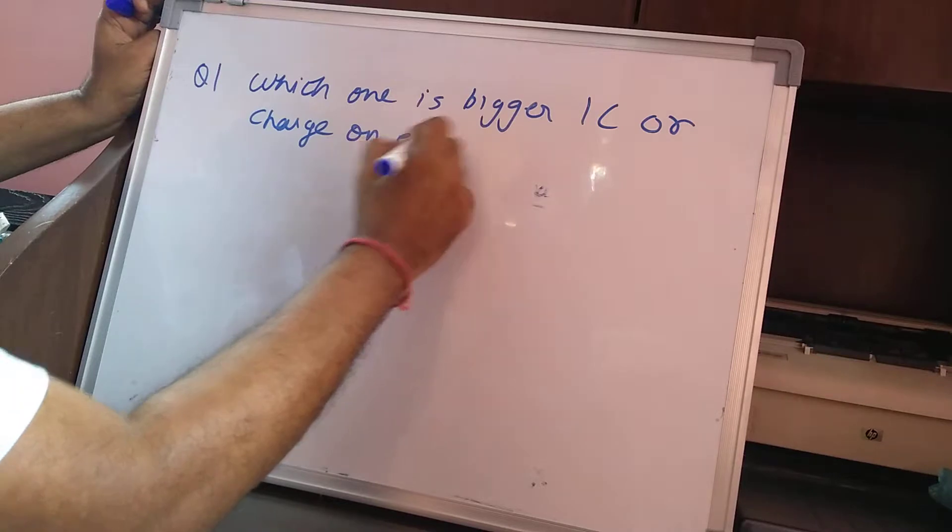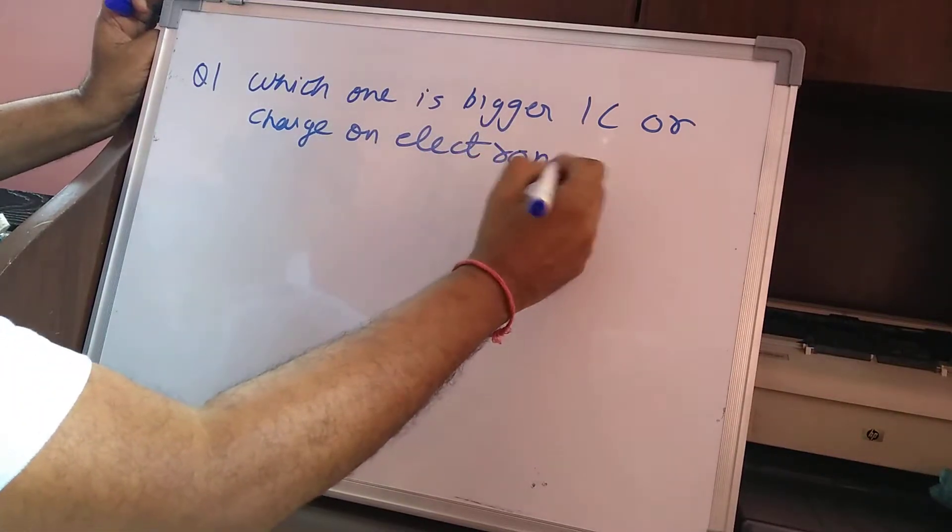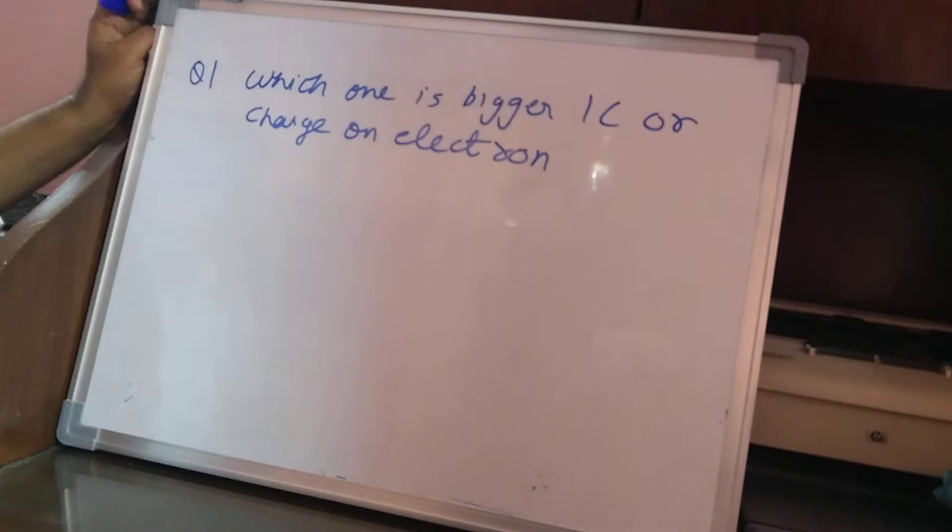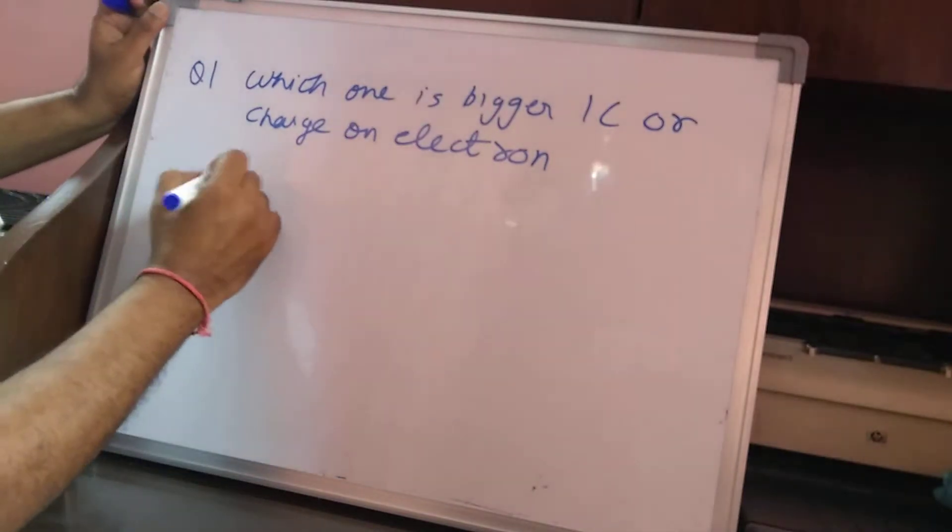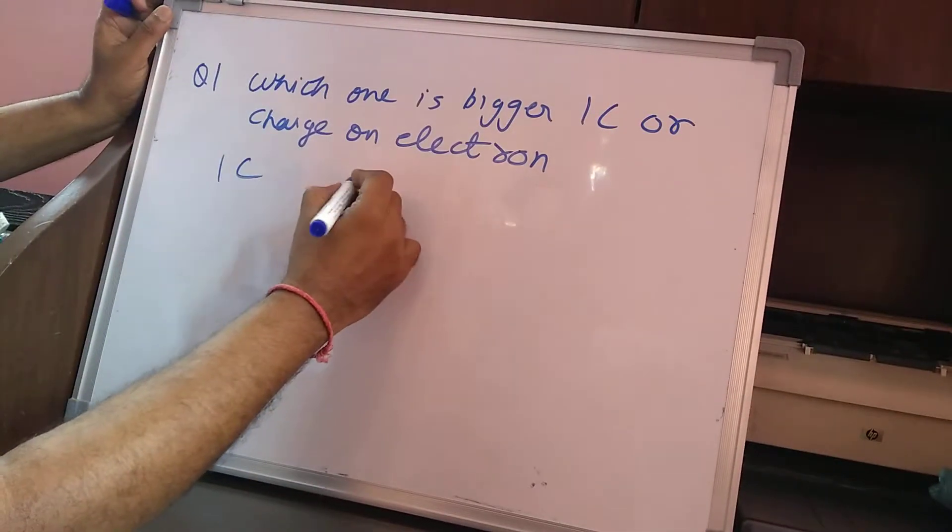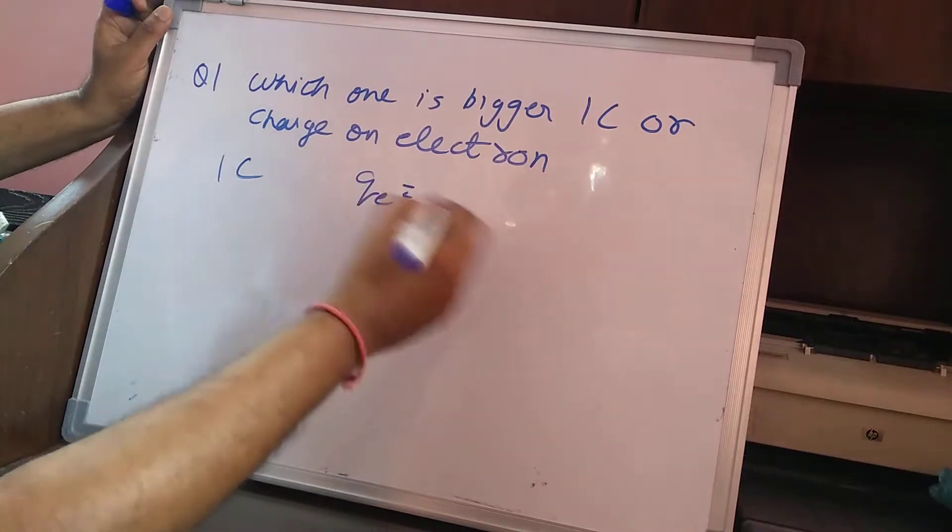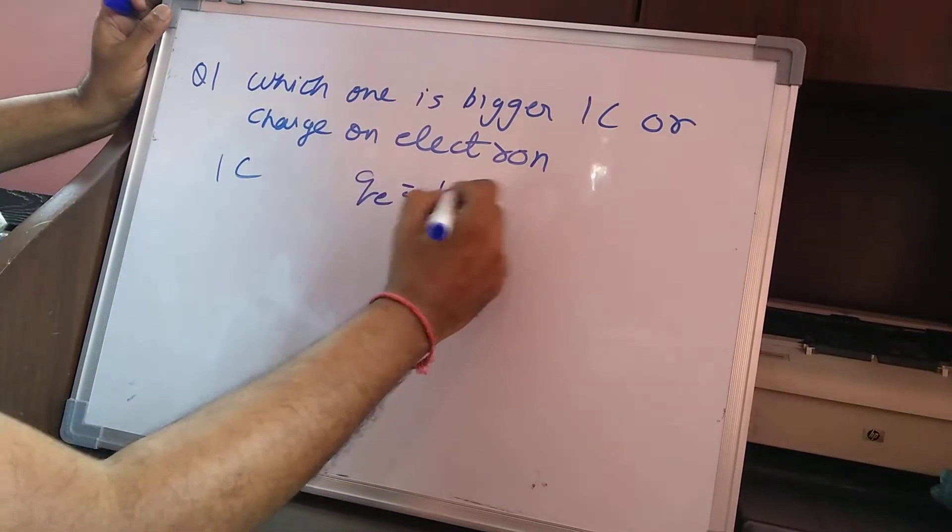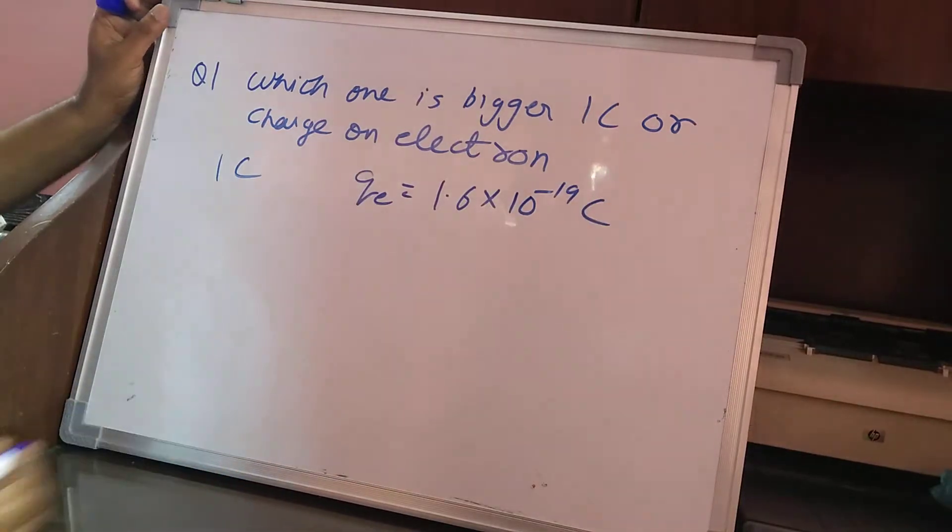What do you think? Which one is bigger, coulomb or charge on electron? See, coulomb is the SI unit of charge. And on another side we have charge on electron. And charge on electron, as I have already told you in my previous lecture, is 1.6 into 10 raised to the power of minus 19 coulomb.